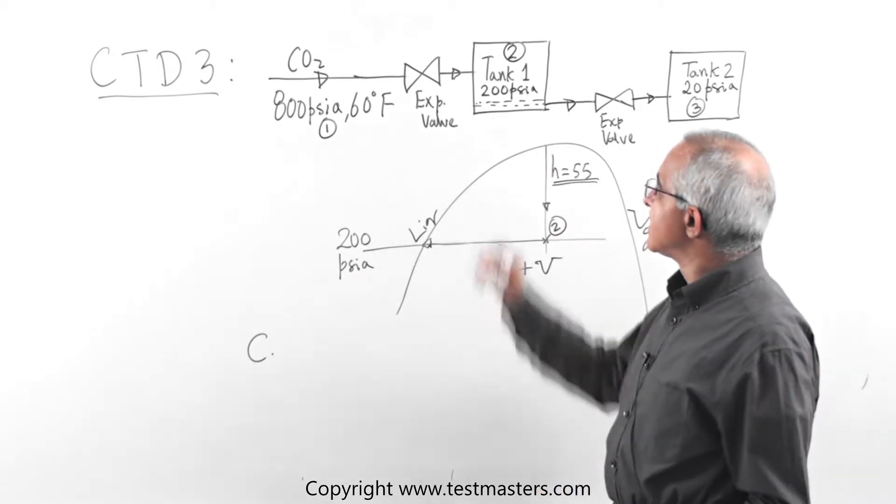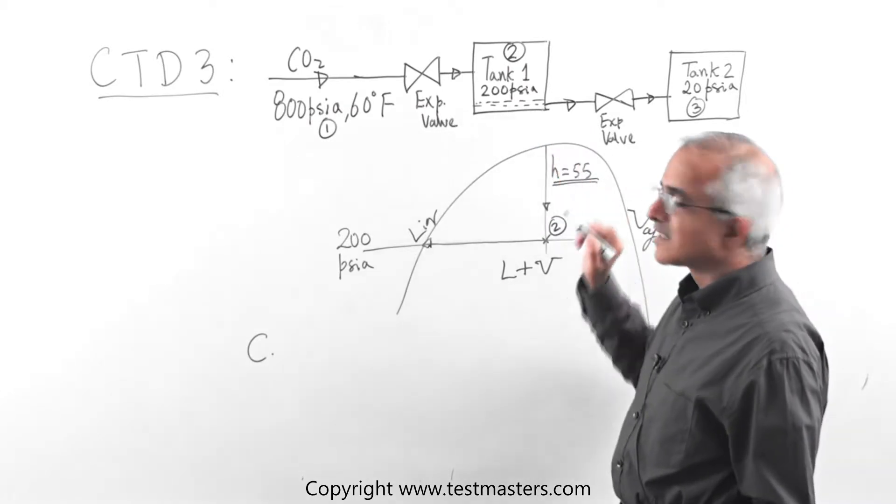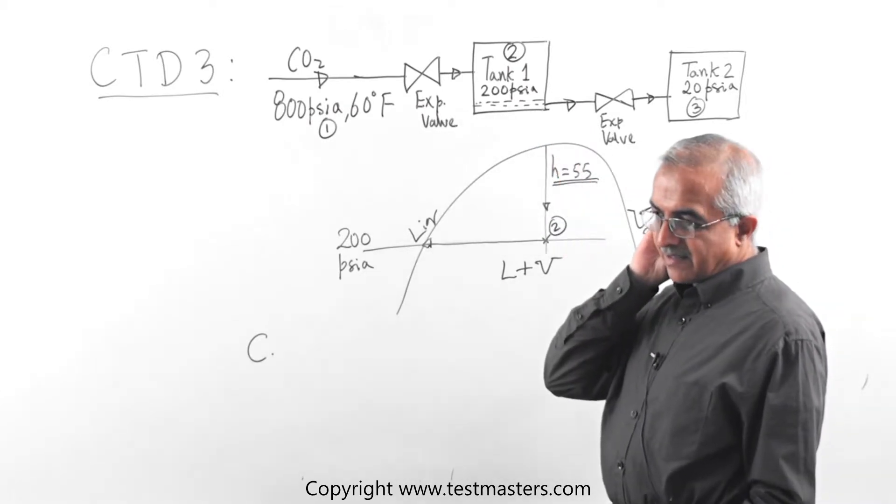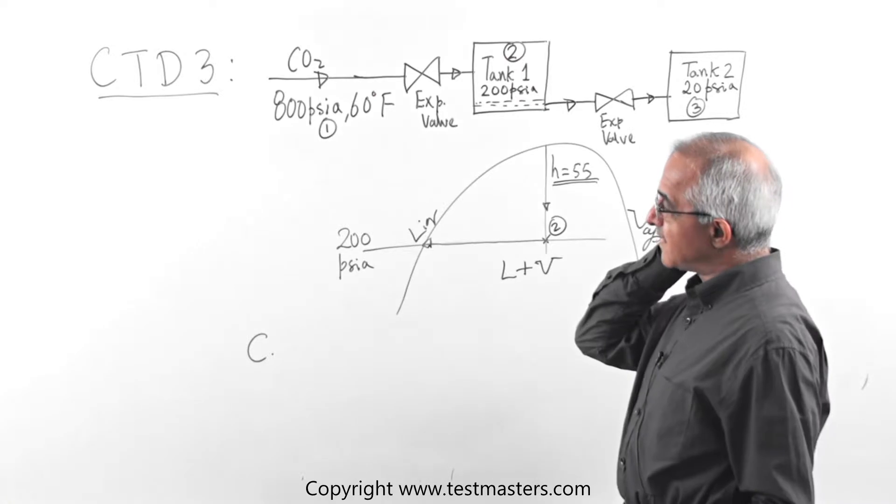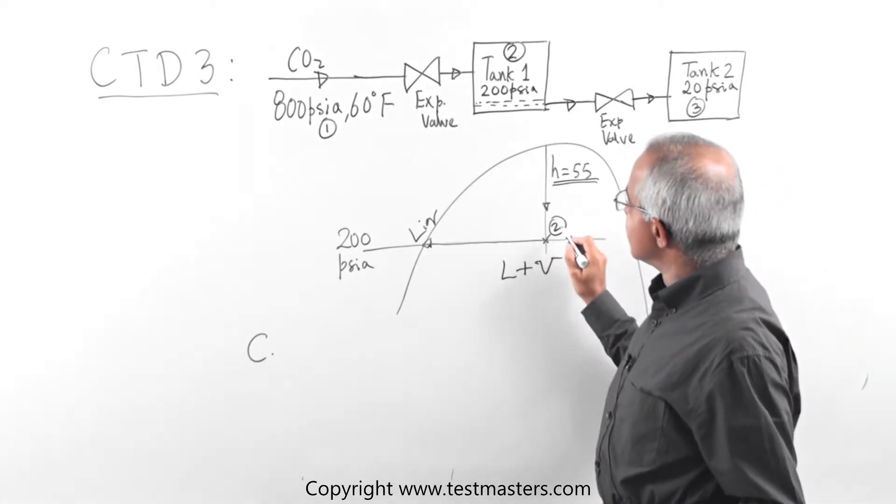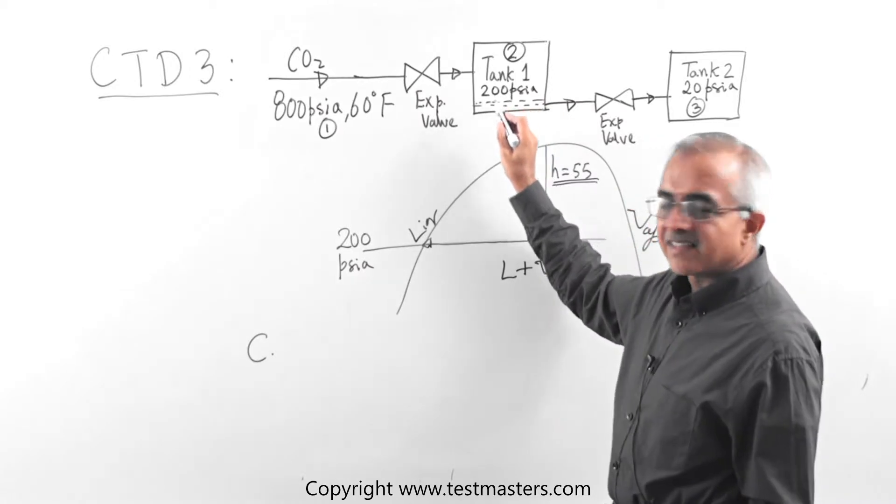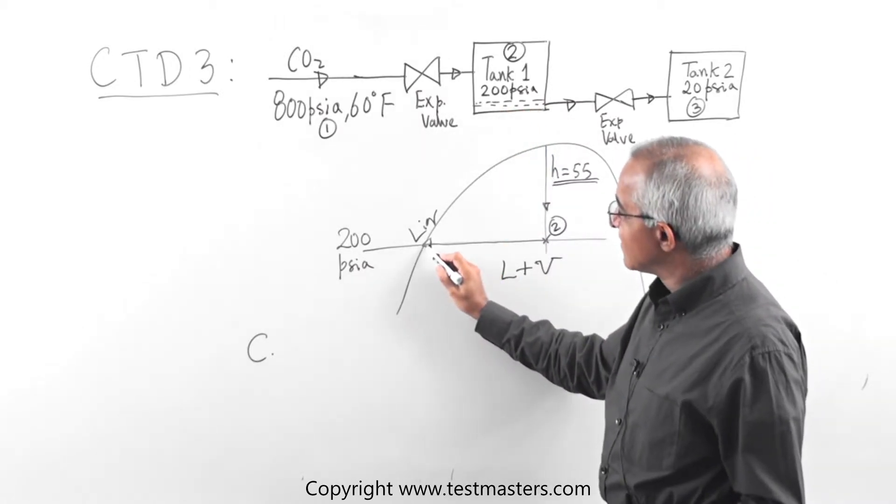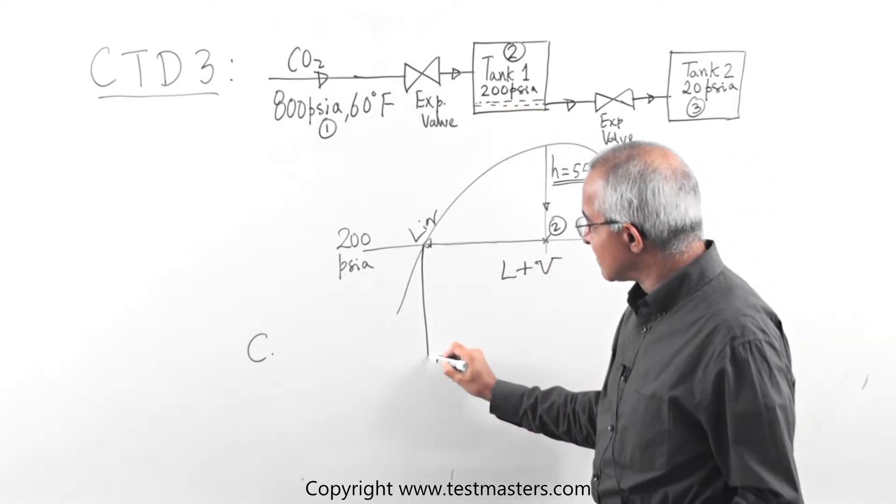Because the liquid, see here, it is shown in the schematic. The liquid from the first tank is flashed. So you have to go from 0.2, which is the state in the first tank, to the saturated liquid line. And then go down to 20 psi.